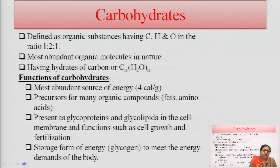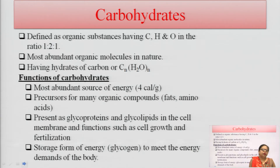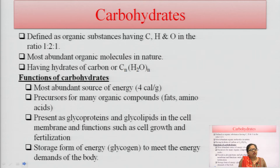Carbohydrate is basically defined as the organic substance having carbon, hydrogen, and oxygen in their structure in the ratio of 1:2:1 — carbon in ratio 1, hydrogen in ratio 2, and oxygen in ratio 1. These are the most abundant organic molecules in nature and easily available. Natural carbohydrates are present in the dextro form; all levo forms of carbohydrate are synthetic in nature. They are also known as hydrates of carbon.